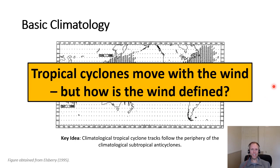We can state that tropical cyclones move with the wind. We have the subtropical ridge and the tropical cyclone moves around it on average. But how do we actually define the wind — what constitutes the wind associated with that subtropical ridge? We'll dig into this primarily in subsequent videos describing the different components of the wind that lead to differences in tropical cyclone motion.